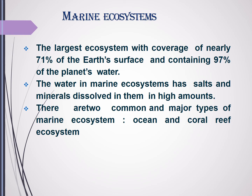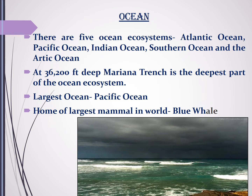The marine ecosystem has salts and minerals dissolved in very high amounts. The marine ecosystem can be of two types: ocean and coral reef ecosystem. There are five oceans: Atlantic, Pacific, Indian, Southern, and Arctic Ocean. The deepest part of the ocean is called a trench, and the Mariana Trench is the deepest part, with a depth of 36,200 feet. The largest ocean is the Pacific Ocean, and it is home to the largest mammal in the world — the blue whale.